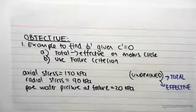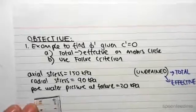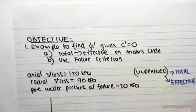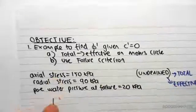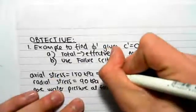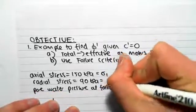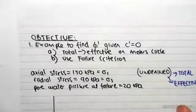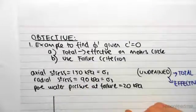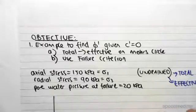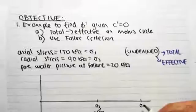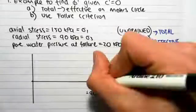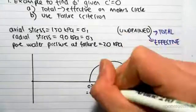If we were to draw this Mohr's circle: the axial stress is the same as sigma1, and the radial stress is the same as sigma3. These are total stresses. So we plot sigma3 equal to 90 kPa and sigma1 equal to 150 kPa. Drawing Mohr's circle would look like this — I don't need to draw the bottom, it's not necessary.